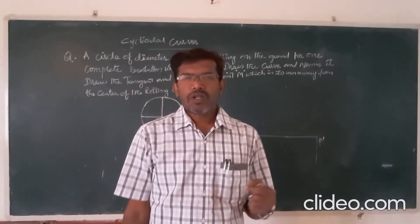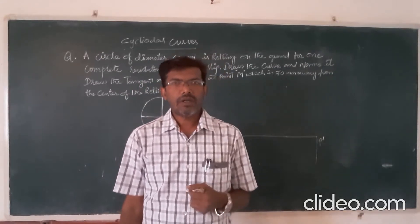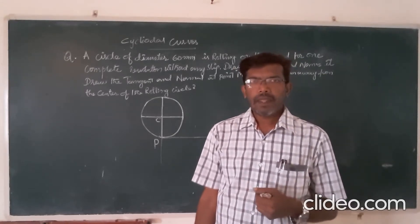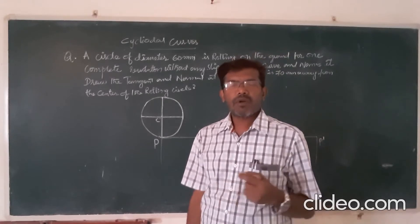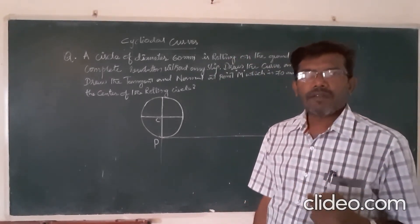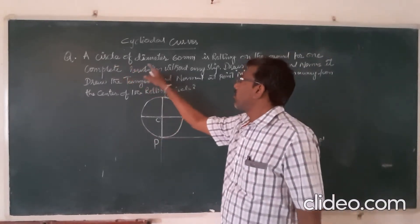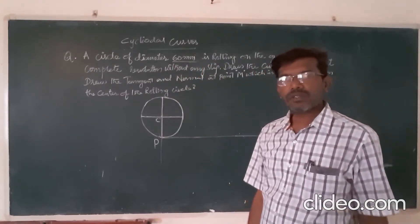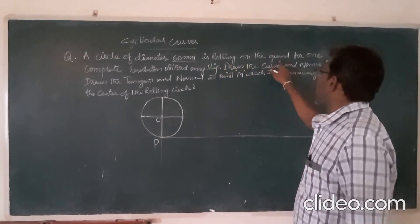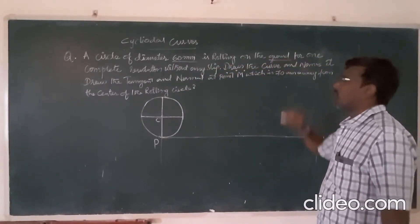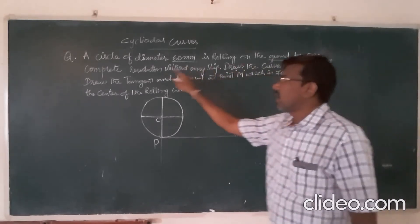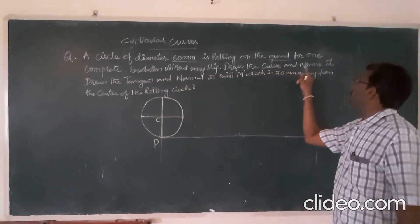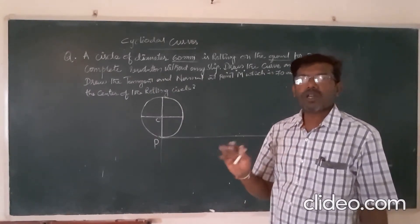Good morning students, welcome to the class. Today let us see another problem of cycloidal curves. First, let us read the problem carefully. The given data: a circle of diameter 60 mm is rolling on the ground for one complete revolution. You have to draw the curve and name it.